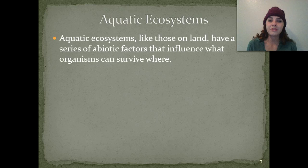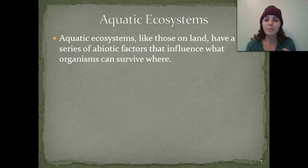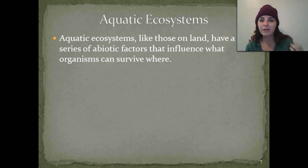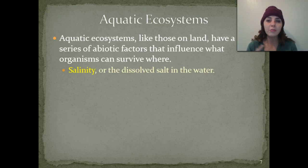Aquatic ecosystems, like those of land, have different types of abiotic factors that influence what organisms can survive there and where they can survive. 'A' means without, and remember that biotic or bio means life — so these are going to be the non-living factors, meaning they have never lived, such as weather. We have salinity, or dissolved salt in the water — that's how much salt is in the water, measured in parts per million.